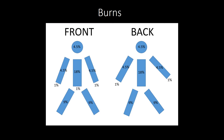Here is the percent body surface area (BSA) diagram showing what percentage each body part counts. Recall that the palms and genitals are 1% each; arms and head account for 4.5%; legs for 9%; and the torso and back each account for 18%. There are three degrees of burns: first degree is epidermis only with no blisters — think sunburns; second degree is partial thickness going through the dermis with blisters present and sensation intact; third degree is full thickness with loss of sensation and a white waxy lesion.